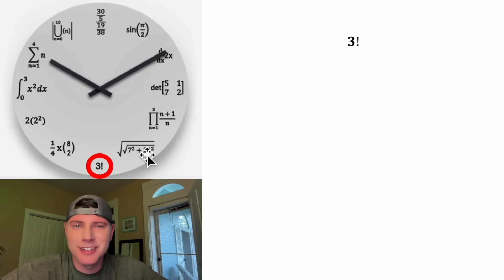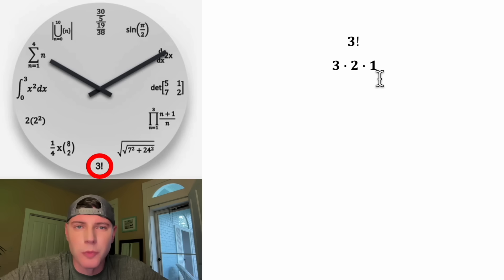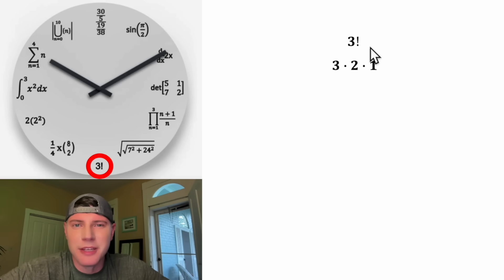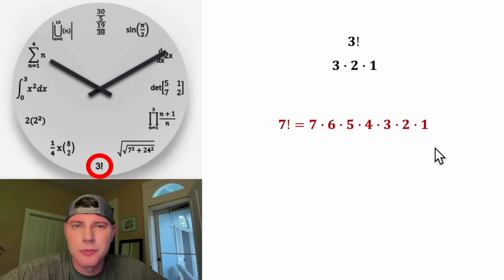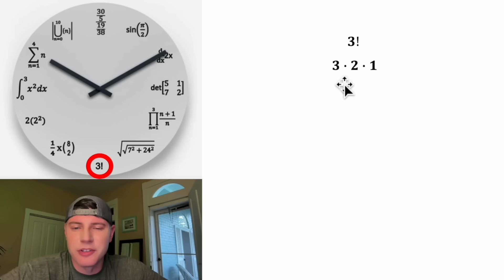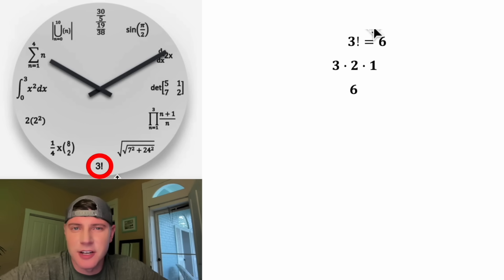Now let's look at the 6 o'clock slot. This exclamation mark means factorial — this is 3 factorial. That means we do 3 times 2 times 1 and stop at 1. For example, 7 factorial would be 7 times 6 times 5 times 4 times 3 times 2 times 1. But since we just have 3 factorial, it's 3 times 2 times 1, which equals 6. So this is equal to 6, and that's why it's in the 6 o'clock slot.